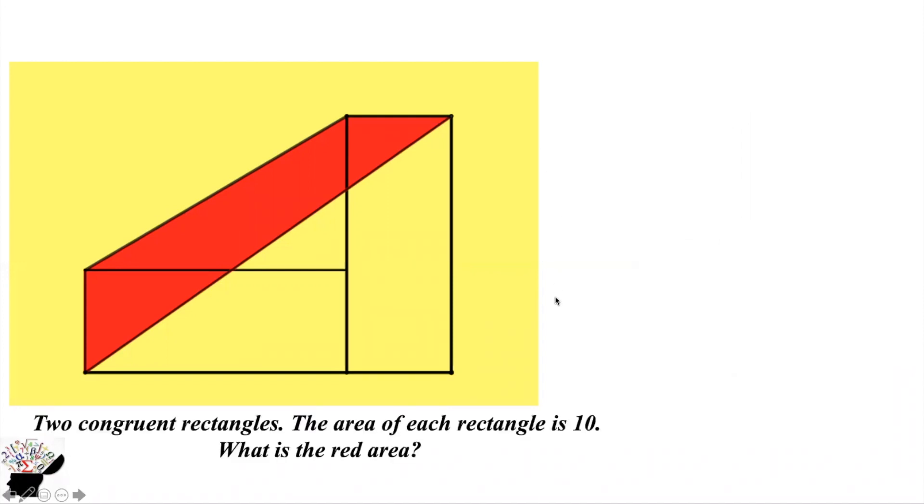solution together. First of all, we can label the parts. Here can be x, this can be y. We have x, we have y, and we also have one x here. So the area of each rectangle is 10, so we can say the area of the rectangle, x times y, is equal to 10.